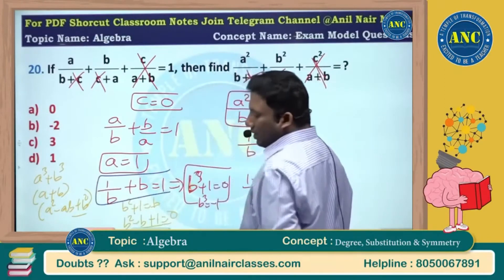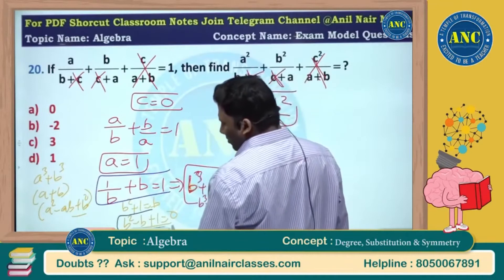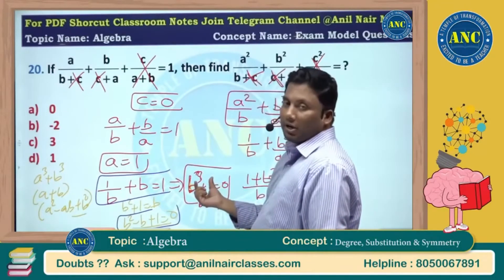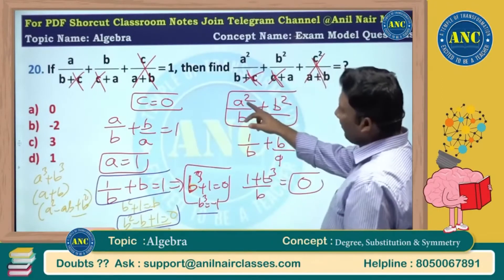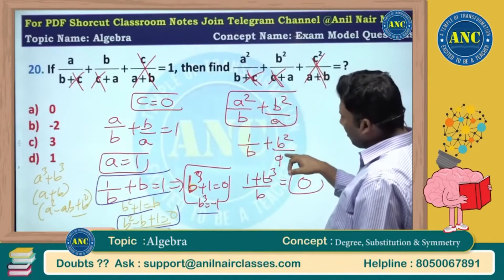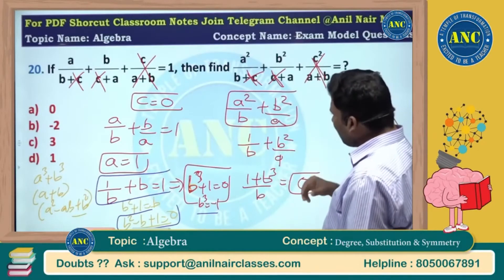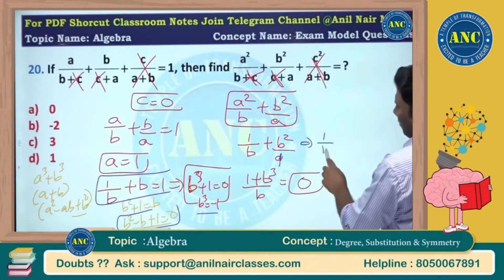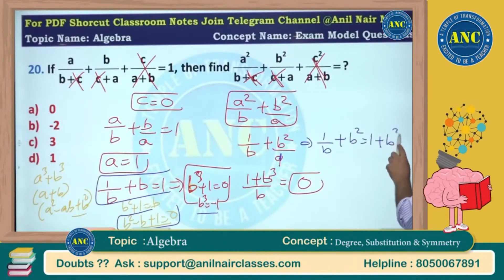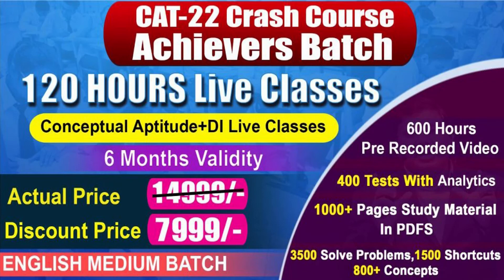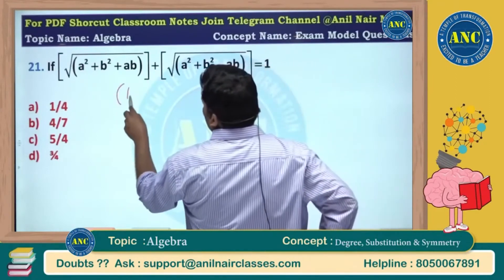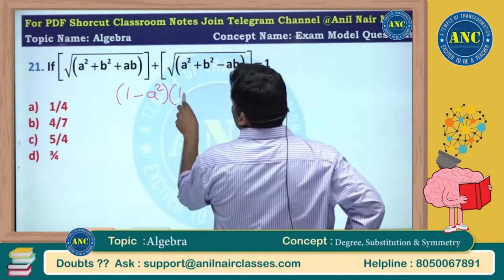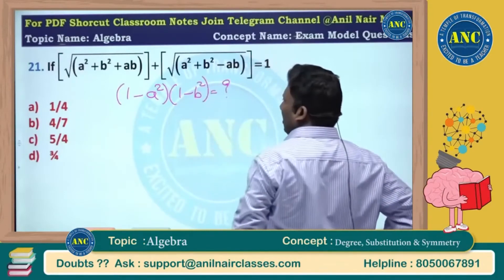So b³ + 1 → (b + 1)(b²) gives b³ = -1. With a = 1: 1/b + b + b²/1, so 1 + b³ = -1 + 1 = 0. Similarly, here is an exam-based question: root of (a² + b²) + root of (a² + b² - ab) = 1. We need to find (1 - a²)(1 - b²).